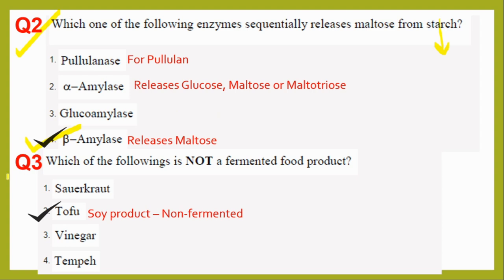Question three asks which of the following is not a fermented food. Again, circle 'not' and use the elimination method. Sauerkraut is fermented cabbage, vinegar is also fermented, and tempeh is a fermented soy product. But tofu is a non-fermented, precipitated product out of soy milk. Hence the answer is tofu.